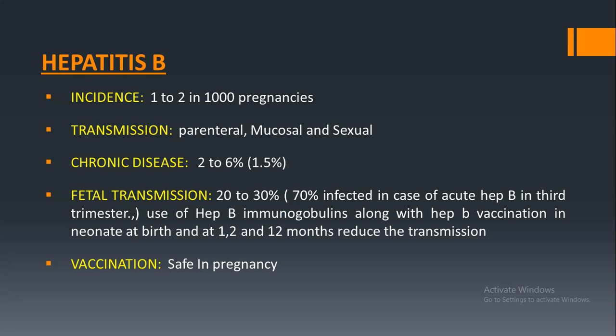Basically, the passive immunoglobulin provides protection against any virus transmitted to the baby from contact with blood during delivery and should be given immediately. The active vaccine provides ongoing protection from subsequent exposure.